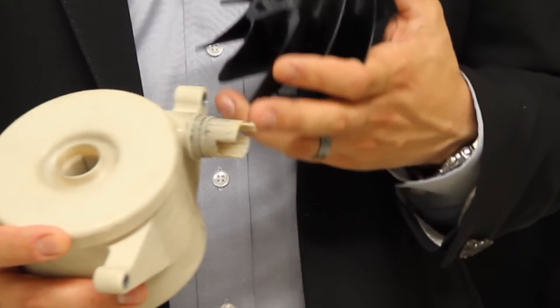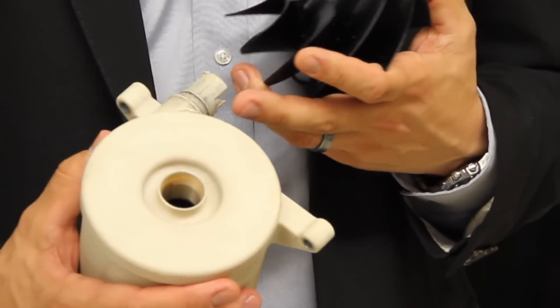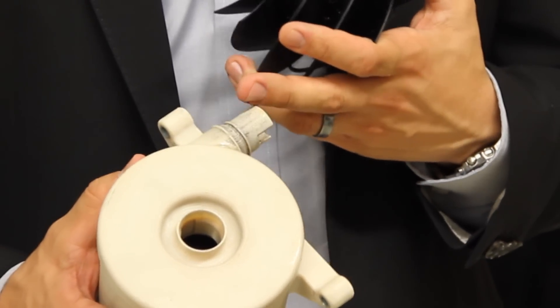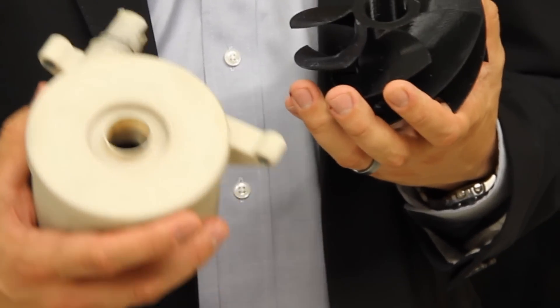The tan Ultem parts or other colors of thermoplastic materials tend to highlight that dirt, grease, and grime, where a black part actually hides or masks that dirty part.